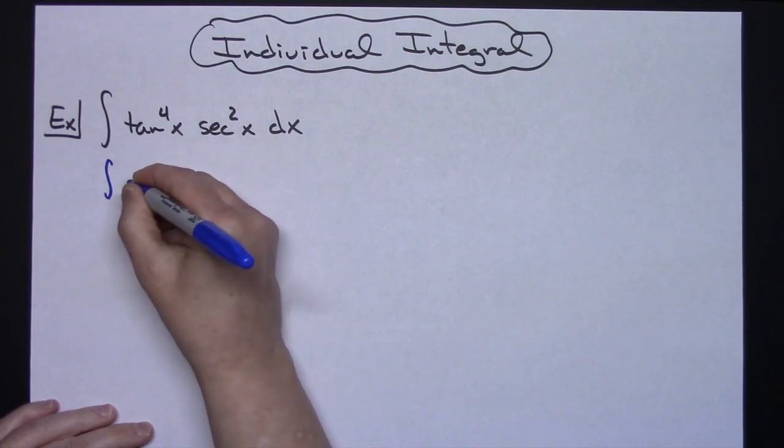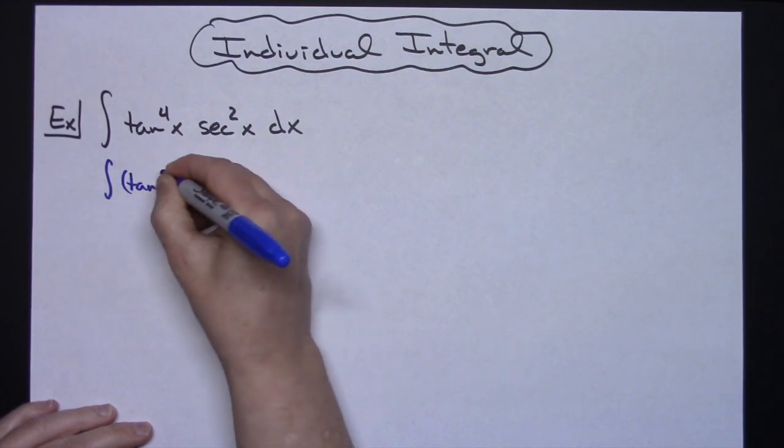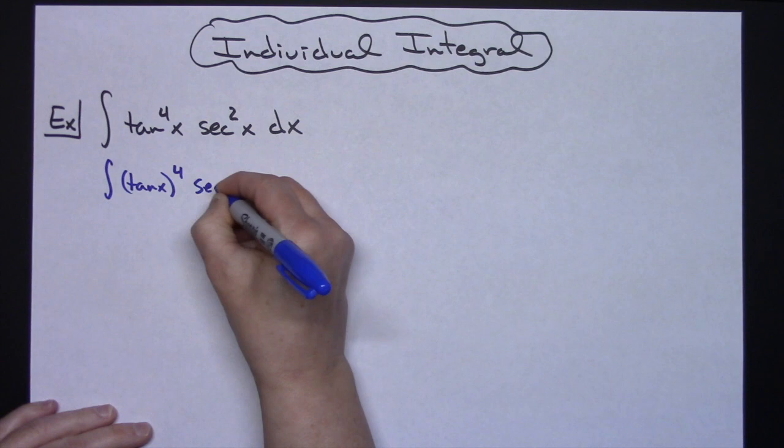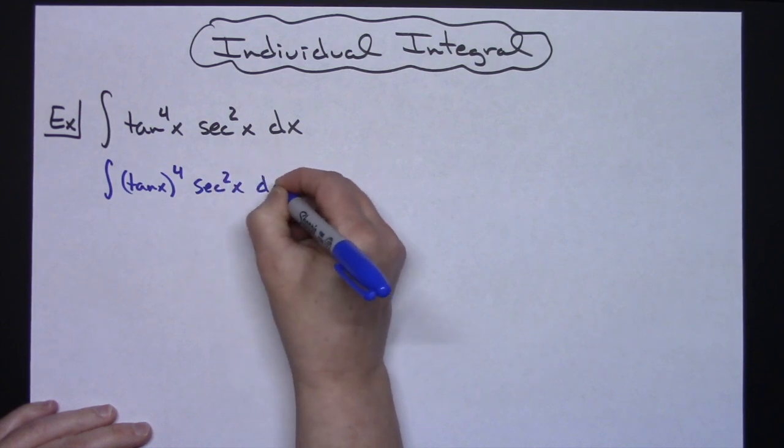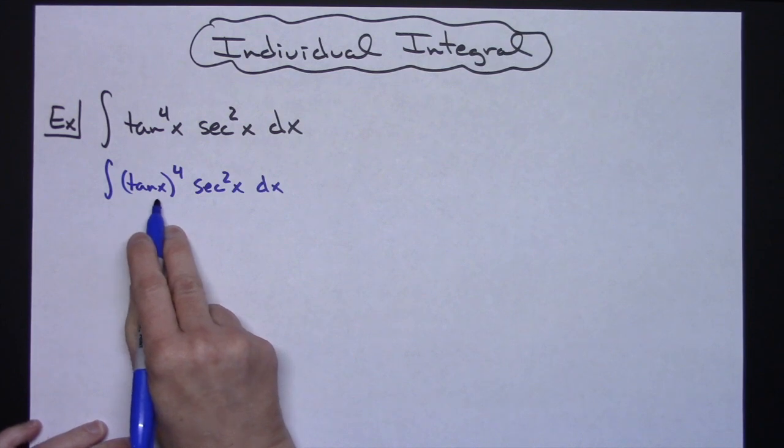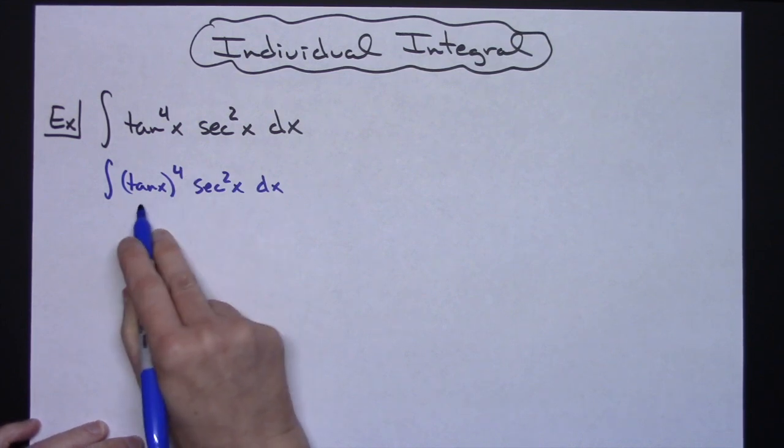So if I rewrite that tan(x) and pull it out and write it as the fourth power like that, what that's going to allow you to see is that the inside function there is tangent x - I've got four of them.